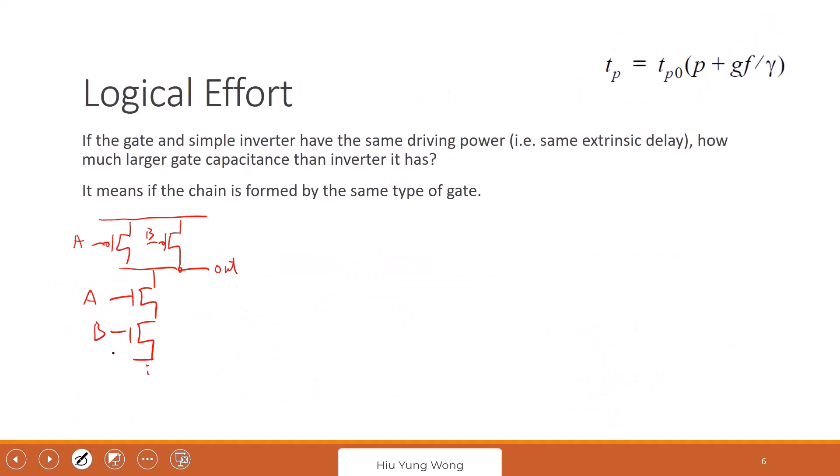2,2. And then how about the PMOS? Also 2,2, right? We don't say 1,1 because the worst case condition is that you only have one of them conducting.